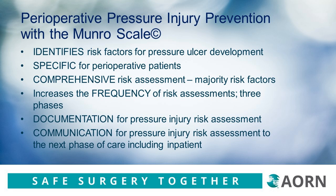These problems are all addressed when you use the Munro Scale. It identifies risk factors for pressure ulcer development and is specific for perioperative patients. It's comprehensive in its assessment because it has the majority of risk factors. It also increases the frequency of risk assessments, with three phases being assessed. This is both a documentation tool and a communication tool for pressure injury risk assessment to the next phase of care, especially including the inpatient population.